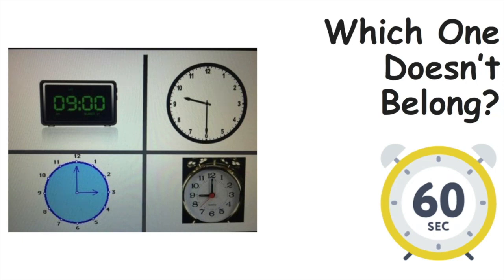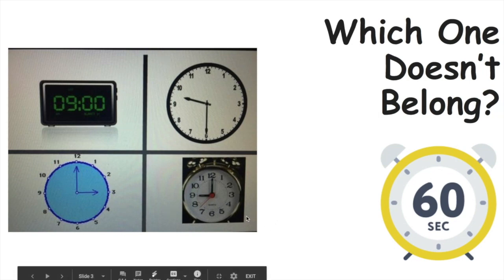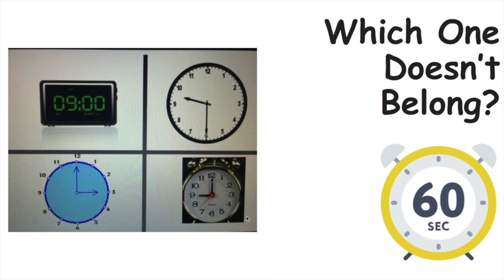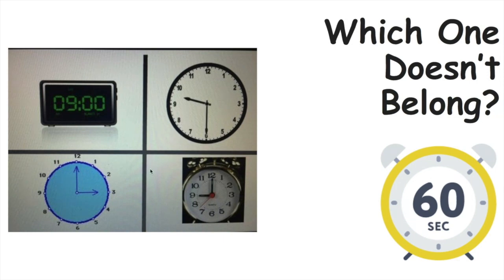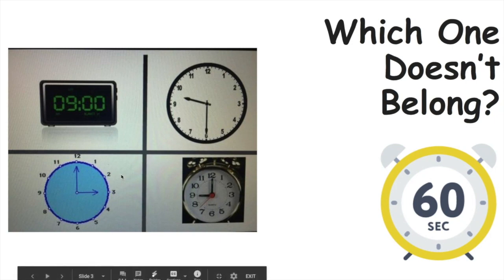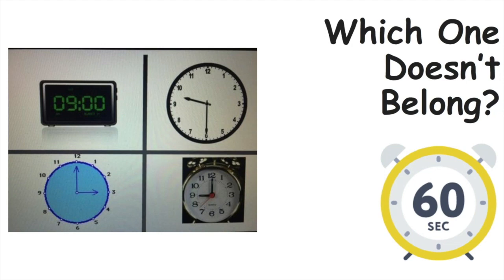Now let's think — which one doesn't belong? Maybe you thought that this picture doesn't belong because it's a picture of a digital clock and all of these other pictures are what we call an analog clock. Or maybe you thought that this picture doesn't belong because it's a picture of an old-time alarm clock. Or maybe you thought that this picture doesn't belong because it is a blue clock and all of the other ones have black and white on them.